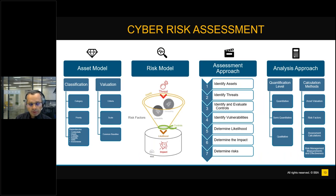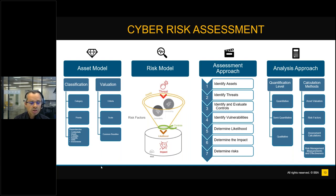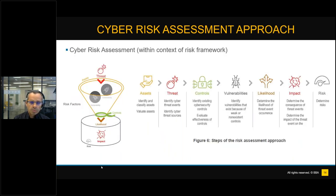The risk model is composed of many risk factors and their relationships. Typical risk factors include vulnerabilities, threats, impacts, and likelihood. The relationship between all risk factors indicates an organization's overall risk. Paul will provide more practical examples of the risk models and risk factors. For more details about all parts of the methodology — assessment approach, analysis approach — we invite you to review the document available on our website.